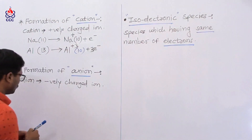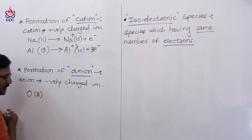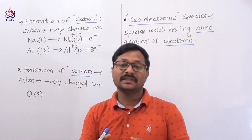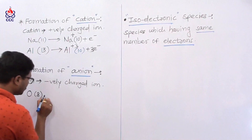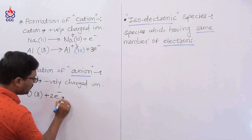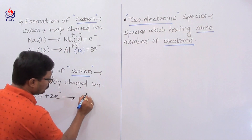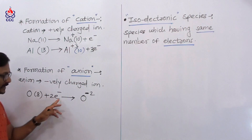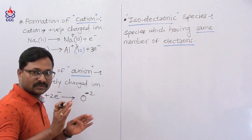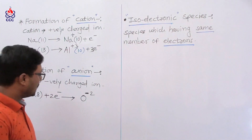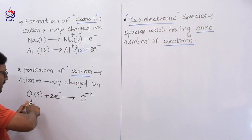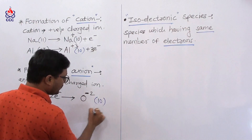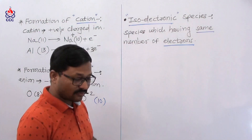For example, in the case of oxygen — oxygen has atomic number 8, meaning oxygen has 8 electrons. Suppose if oxygen gains 2 electrons, then there is formation of the O2- ion. Oxygen gains 2 electrons, therefore 8 plus 2 means the oxygen raised to minus 2 ion has 10 electrons. So this is the formation of an anion.